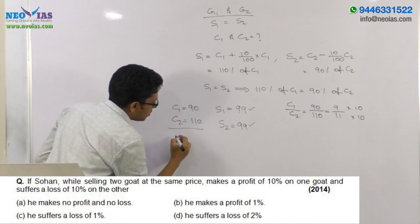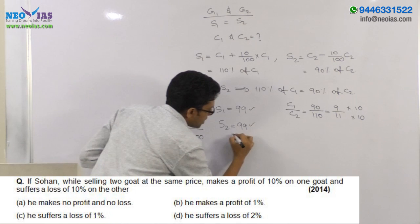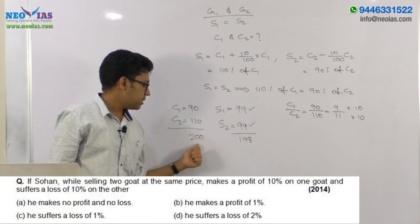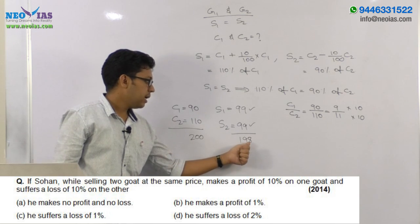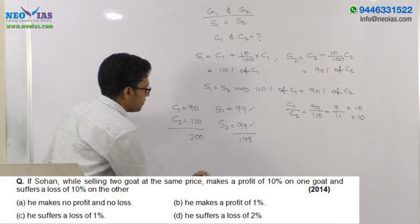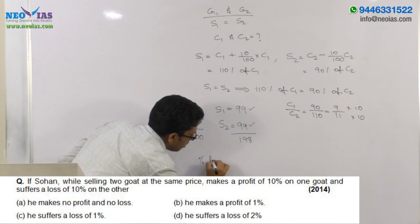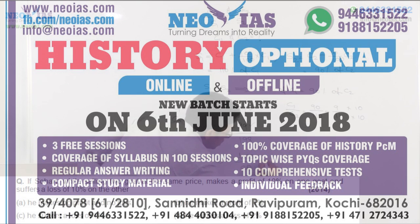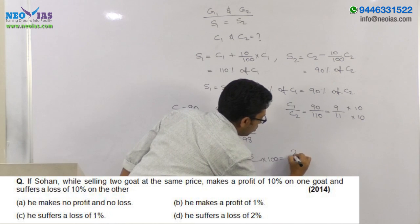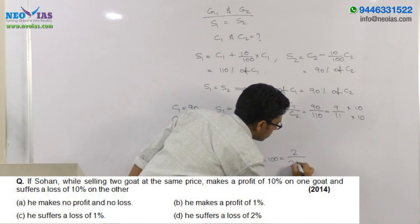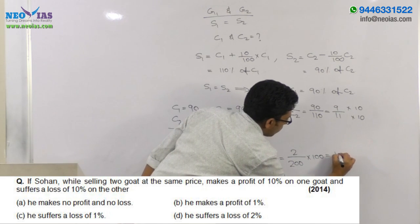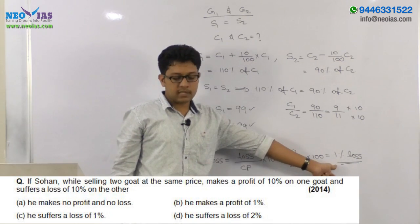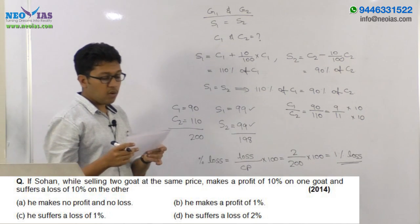Total cost price of the two goods is 200 and total selling price is 198, which means he lost 2 rupees in his transaction. Percentage loss equals loss divided by cost price into 100, so 2 divided by 200 into 100 equals 1% loss. He lost 1% in his whole transaction. The correct answer will be option C — he suffers a loss of 1%.